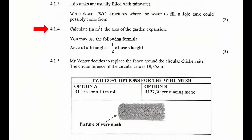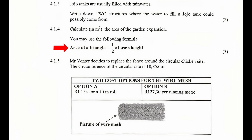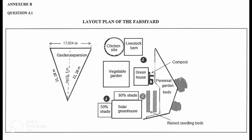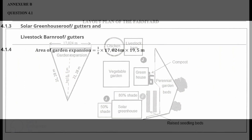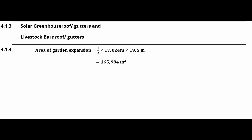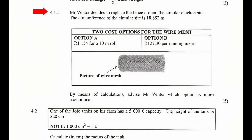4.1.4 — Calculate in square meters the area of the garden expansion. You may use the formula: Area of a triangle equals one-half times base times height. From the layout plan in Annexure B, the base of the triangular garden is 17.024 meters and the height is 19.5 meters. So the area equals one-half times 17.024 times 19.5, which equals 165.984 square meters.